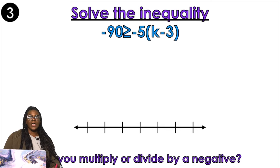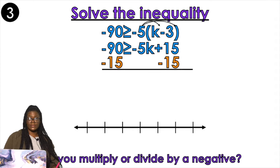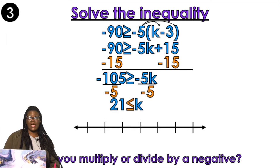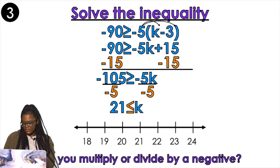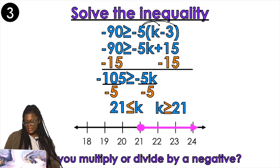Distribute — we love to see it. Negative 90 is greater than negative 5k plus 15. Subtract 15 from both sides because get rid of that constant. Negative 105 is greater than or equal to negative 5k. How do I get k by itself? Divide by negative 5 on both sides. When I divide by a negative on both sides, I have to flip my symbol. So I get 21 is less than or equal to k. We got to flip that symbol one more time. And ta-da — you did it.